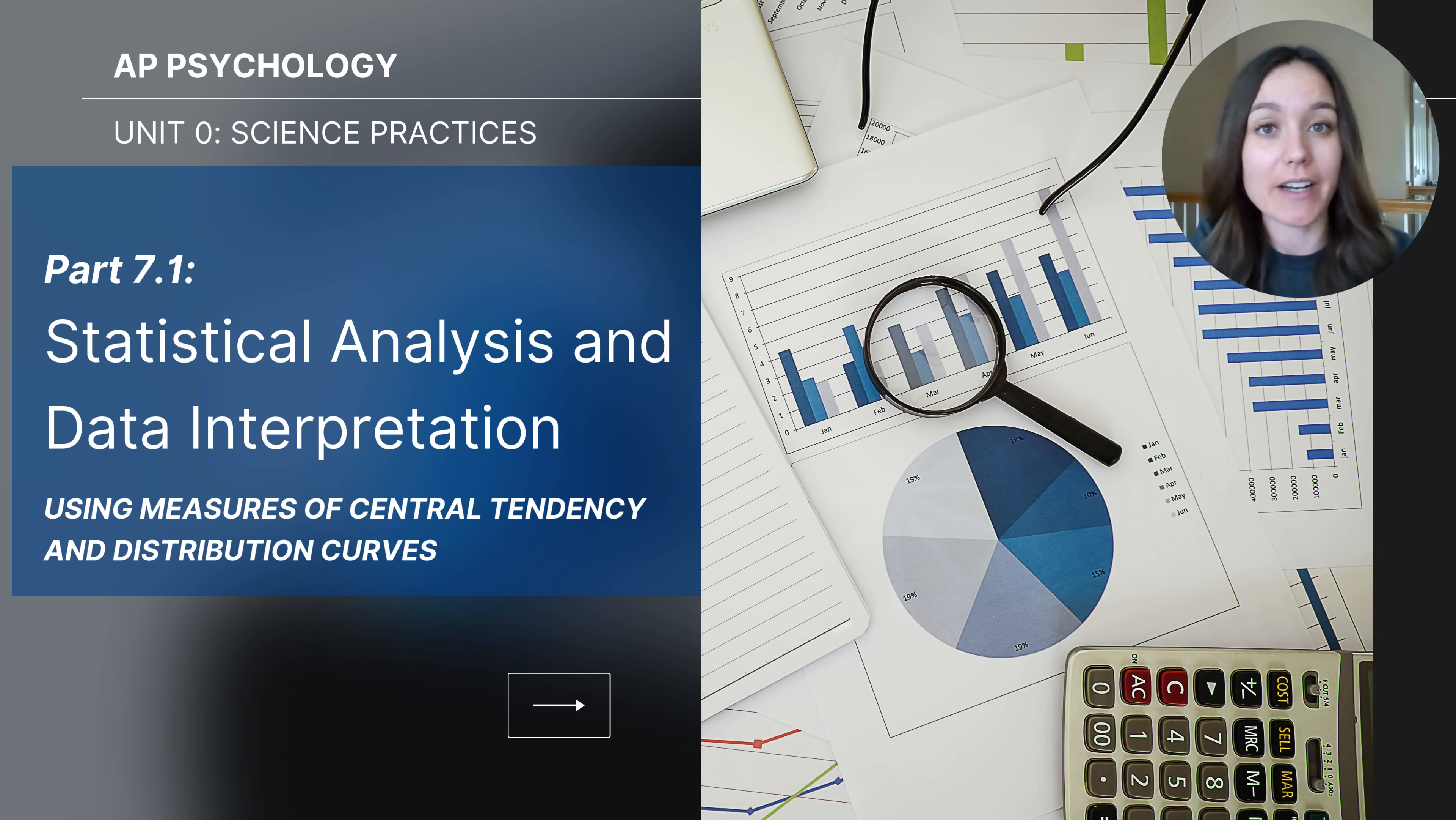This video is in a series called Science Practices for AP Psychology students and it is part 7.1, which means there are two lessons in this section about statistical analysis. This particular video will cover measures of central tendency and distribution curves.